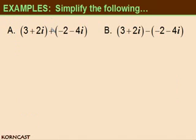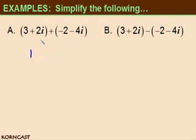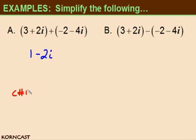In all of our examples, we're going to simplify the following. In example a, we're going to add a complex number to another complex number. When adding or subtracting two complex numbers, it's absolutely no different than adding two binomials together — you really just need to collect like terms. So you're going to add the real part to the other real part: 3 plus negative 2 is 1. Then you add the imaginary parts: 2i plus negative 4i gives us negative 2i. Is this in complex number form — that is, in the form a plus bi? It sure is: 1 minus 2i.